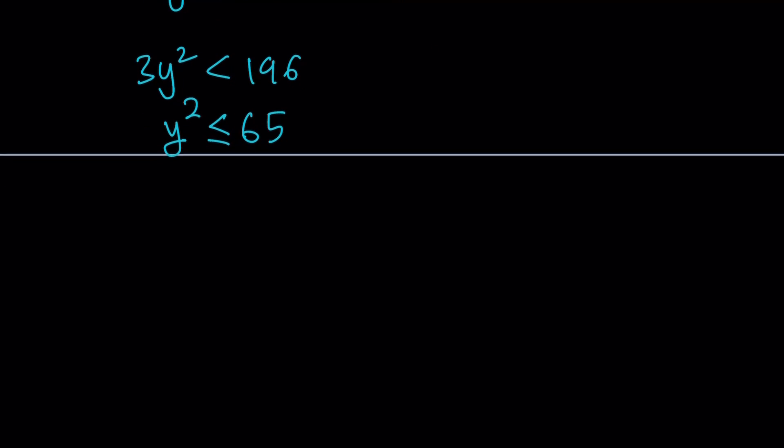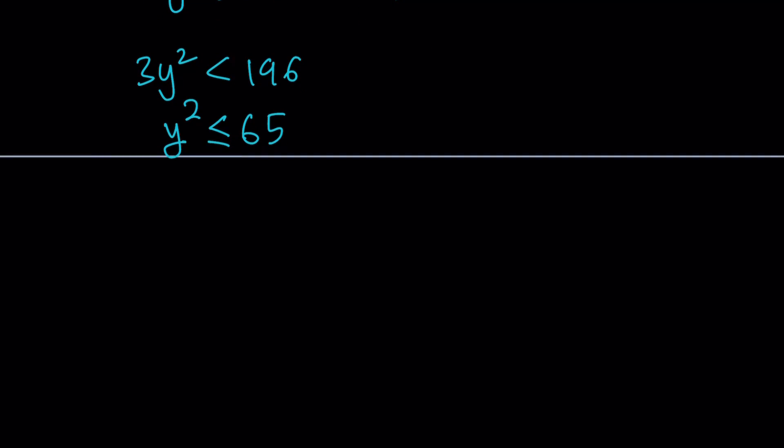We skipped that case, which means 3y squared needs to be less than 196 because the sum of two positive quantities is 196. This kind of means that y squared, think about it, if y squared is 65, 3y squared is going to be 195, and you're still going to be less than 196. So we can pretty much say that y squared needs to be less than 65, but if y squared is 65, you're going to be okay because in that case you're still going to be less than 196.